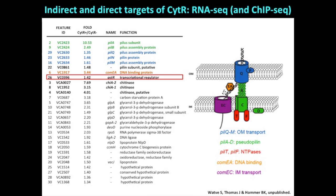Jacob also jumped on the bandwagon and said let's do some ChIP-seq. In ChIP-seq, you're looking for a protein and finding all the pieces of DNA it directly binds to. He makes antibodies to CytR, pulls down all the pieces of DNA stuck to CytR, and then we sequence them all. He also hits Quister — he hits Quister as a direct target of CytR.